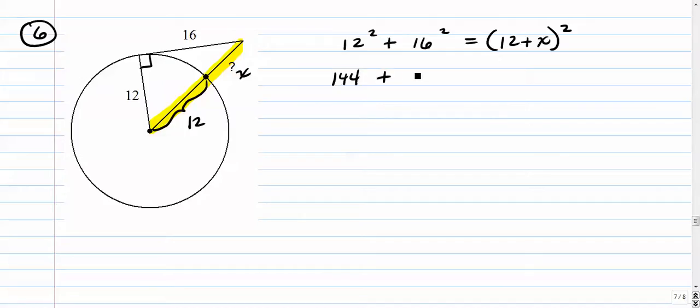Here we go. 144 + 256, I think that's 400. Is that equal to... Now we're going to FOIL this. So we expand it. Expand the binomial and multiply. First times first. Outside. Inside. And last.